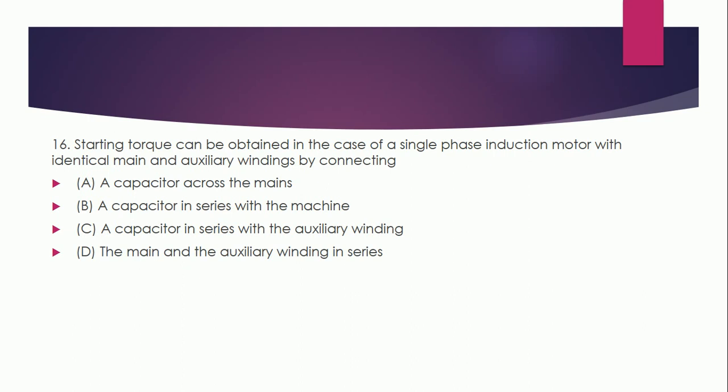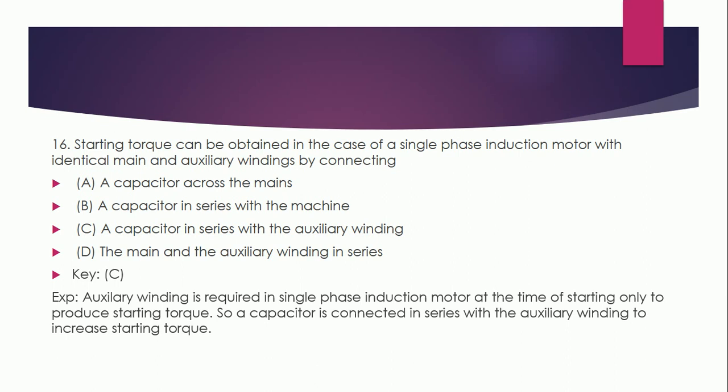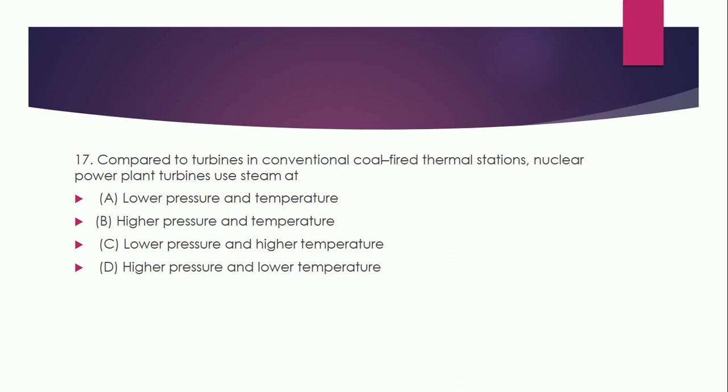Question 16: Starting torque can be obtained in a single-phase induction motor with identical main and auxiliary windings by connecting: A: capacitor across the mains, B: capacitor in series with the machine, C: capacitor in series with auxiliary winding, D: main and auxiliary winding in series. The correct answer is C — capacitor in series with auxiliary winding. The auxiliary winding is required at starting only to produce starting torque, so a capacitor is connected in series with the auxiliary winding to increase the starting torque.